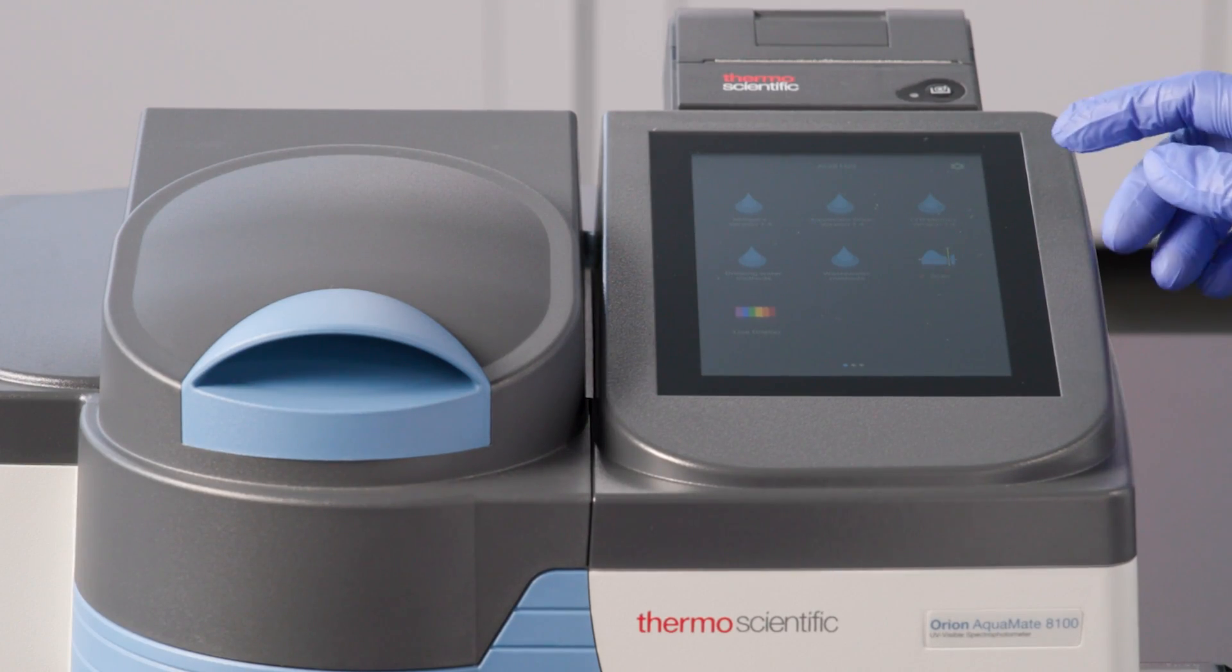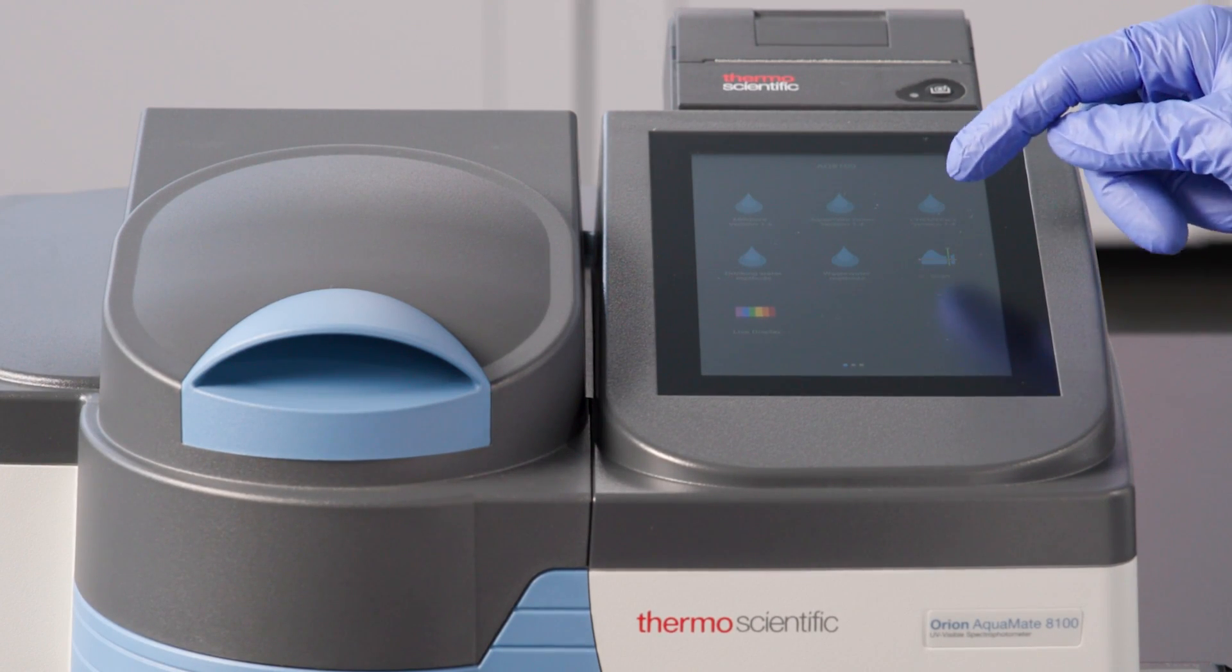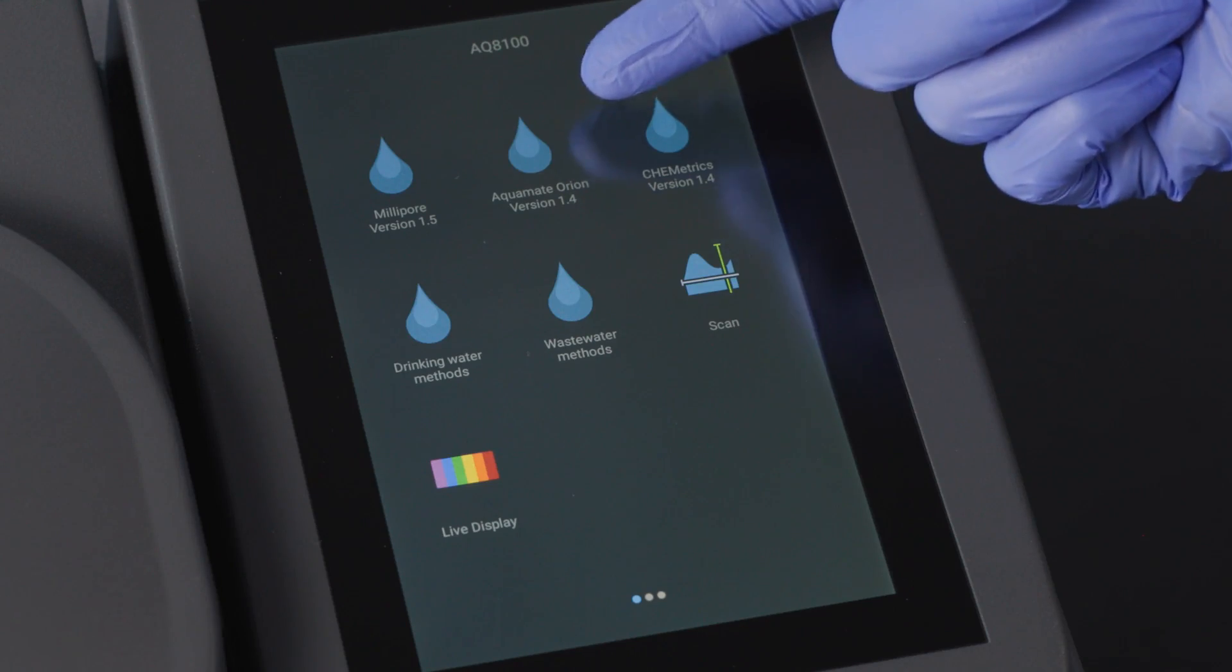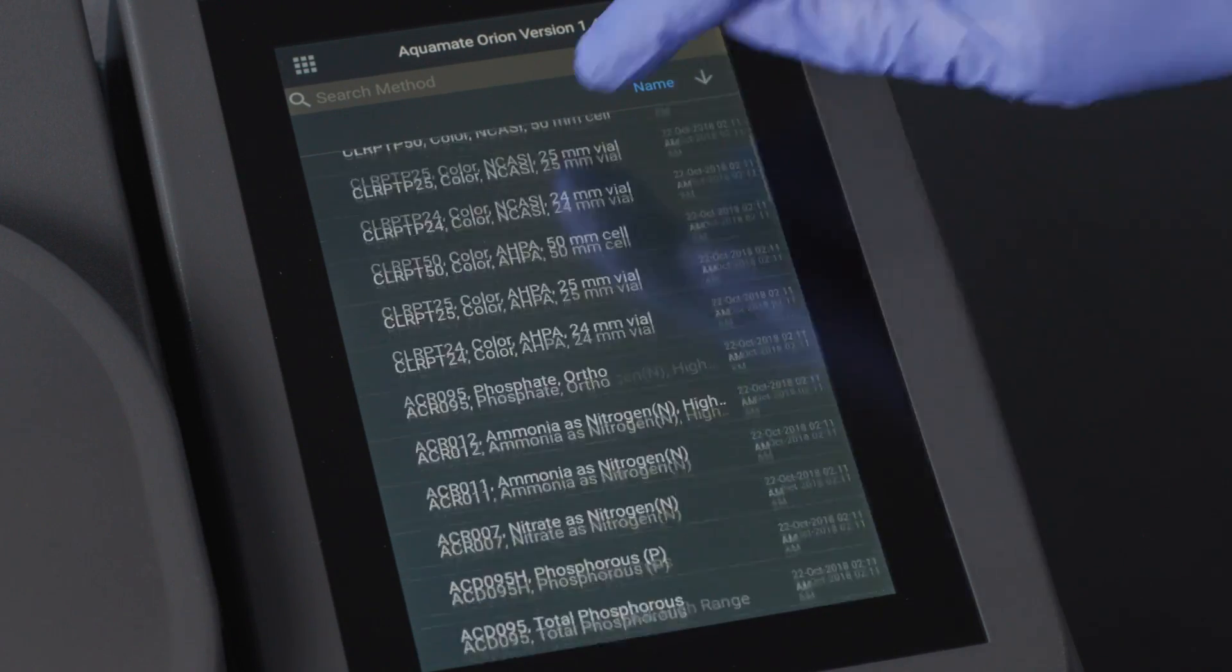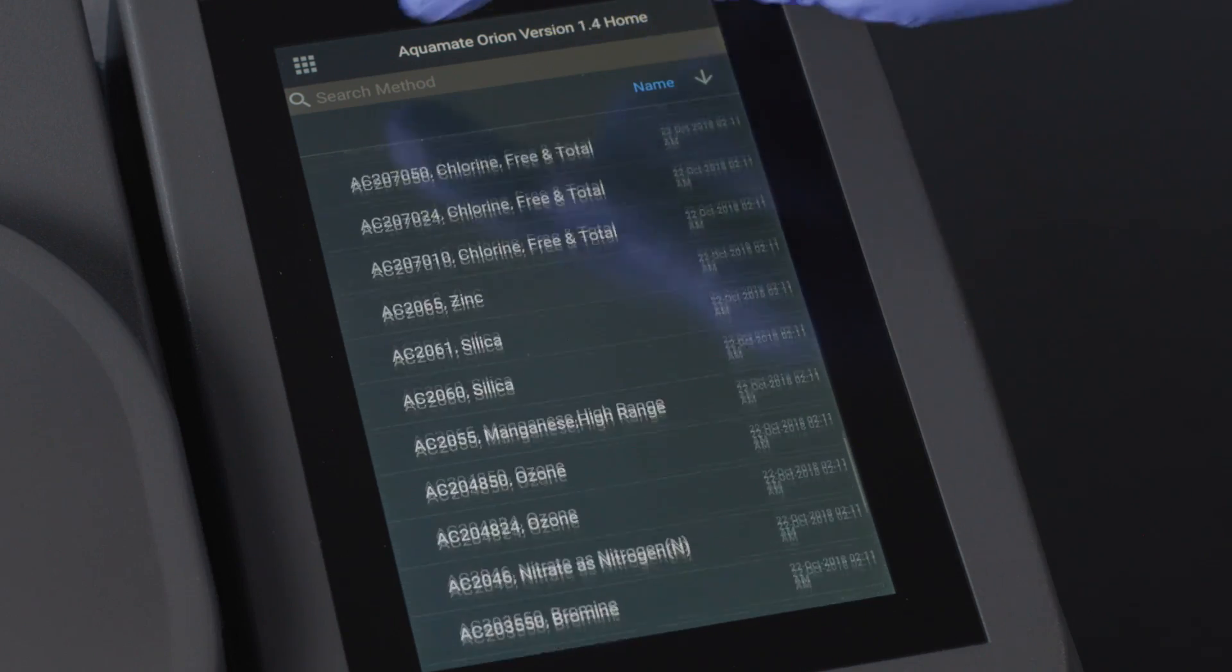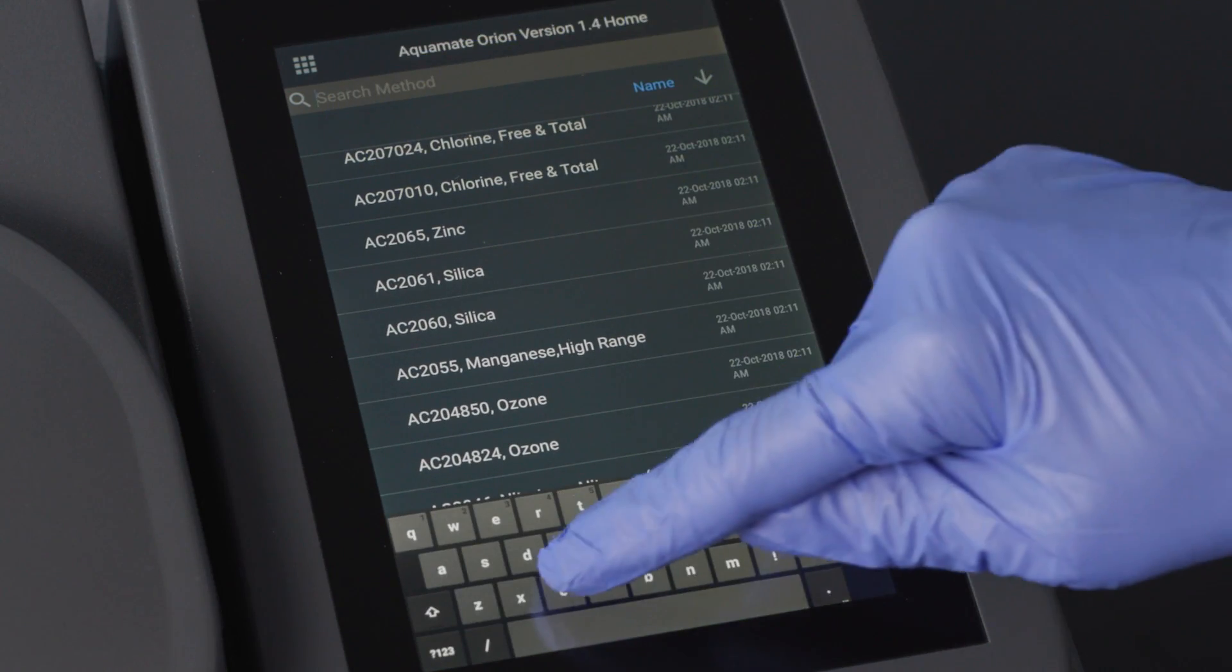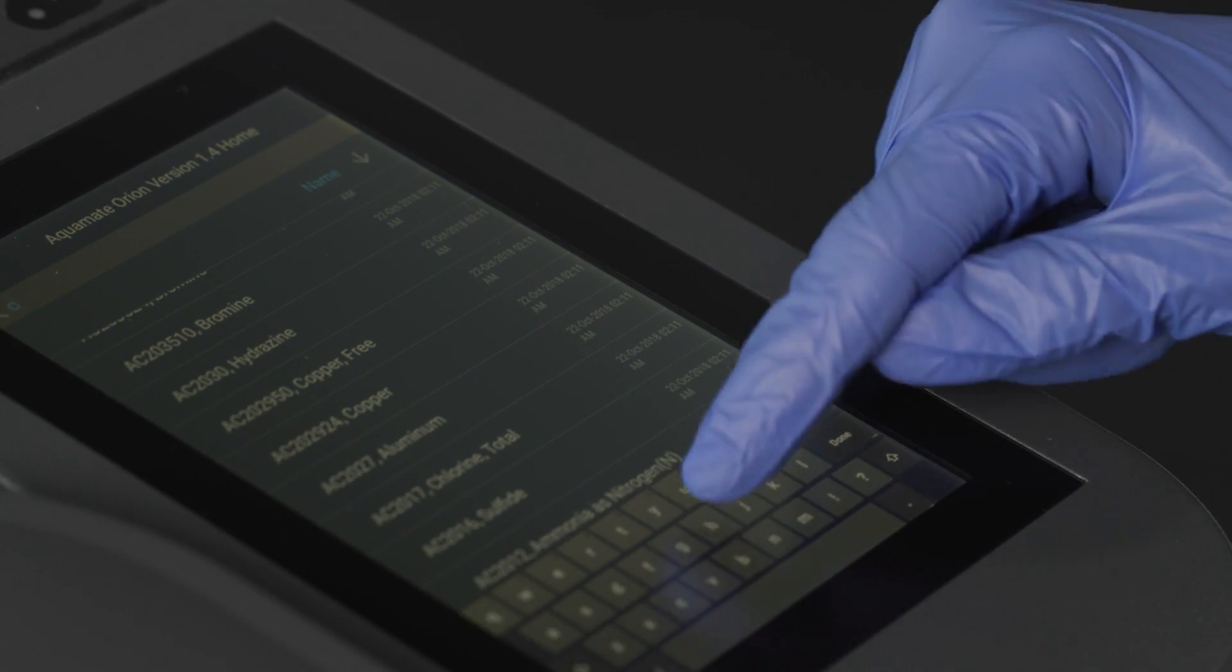We can access this preprogrammed method under the Orion Water Analysis Droplet menu. From here, we can either scroll through the available methods or we can select the search bar. When this keyboard pops up, I will enter chlorine as the search parameter.